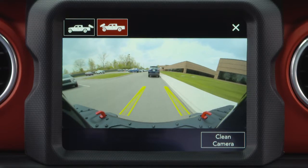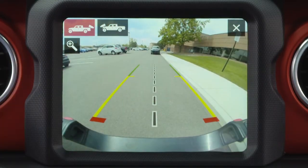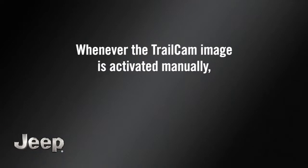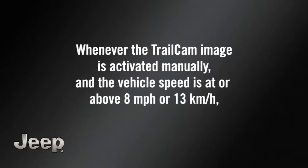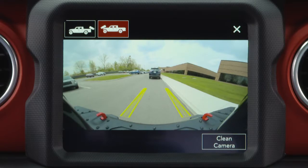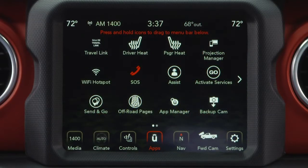Return to the Backup Camera by pressing the Backup Camera View button. Whenever the TrailCam image is activated manually and the vehicle's speed is at or above 8 mph or 13 km/h, a display timer is initiated. The image will be displayed until the timer exceeds 10 seconds.